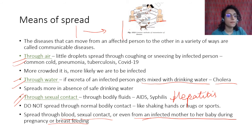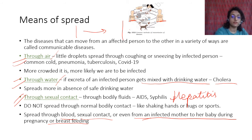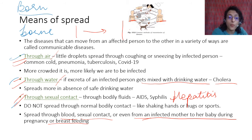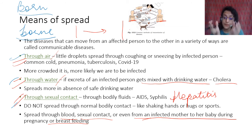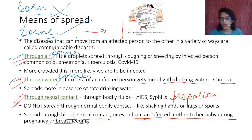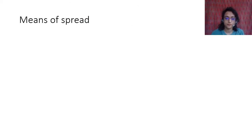These are common ways of spread: air (airborne), water (waterborne). There is also spread through sexual contact. Note: it is 'airborne' and 'waterborne' — spelled with an E — meaning the disease is borne or carried by air or water, not that it is born there. These are the main means of spread.